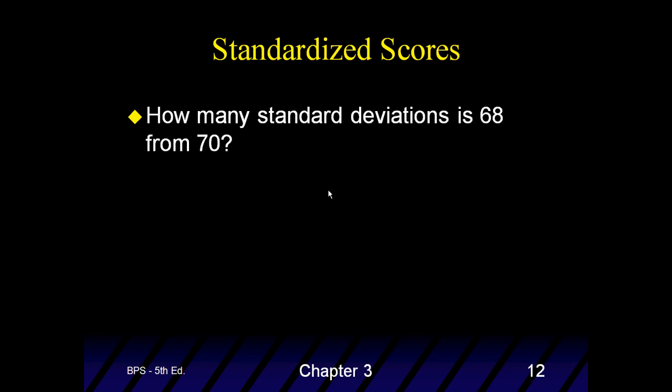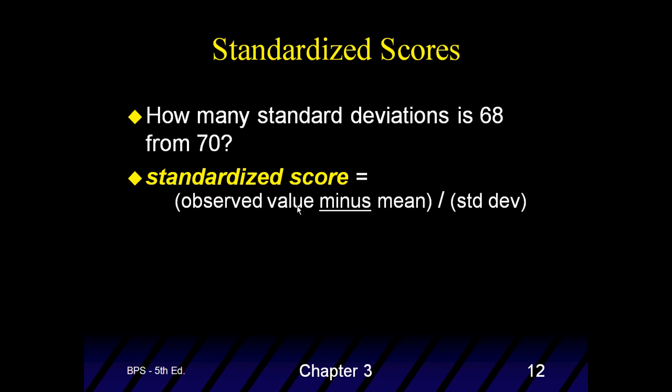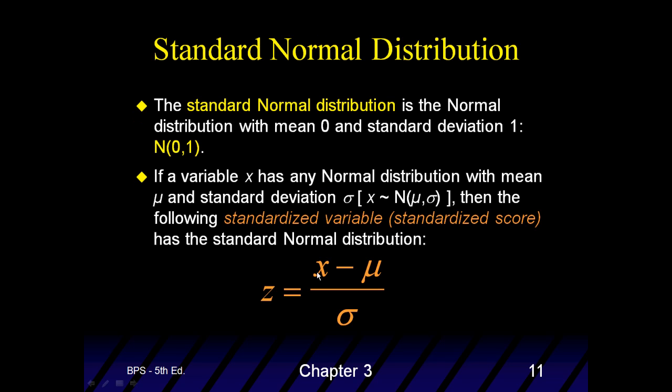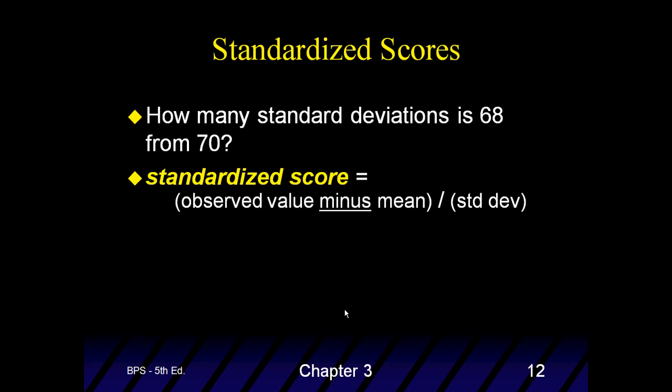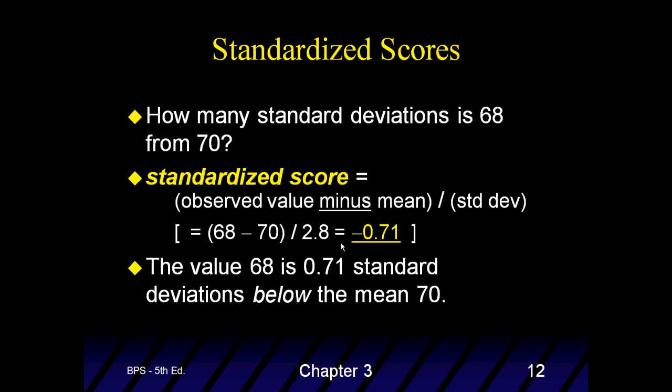So, this is how it's used. Again, the question was how many standard deviations, 68 from 70. So, we are going to find the z-score, the standardized score. So, this is the equation. So, they take the 68 minus 70. Let's go back. 68 minus 70. And they are going to divide by the standard deviation, 2.8. So, here is the 2.8 right there. And you get negative 0.71. So, that now, you've just changed that 68 to a standardized z-score.